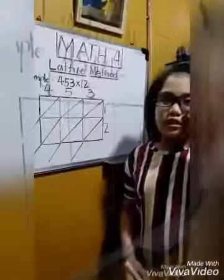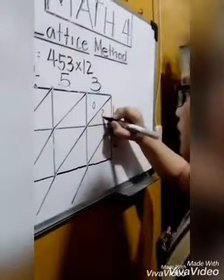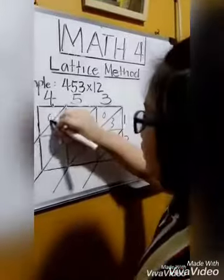So, diagonal line, multiply. 1 times 3 equals 3. 1 times 5 equals 5. 1 times 4 equals 4.